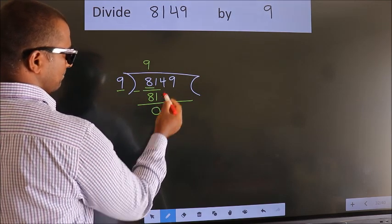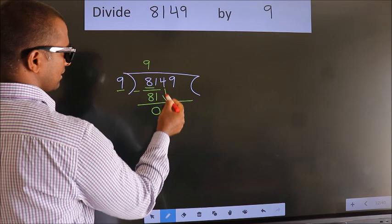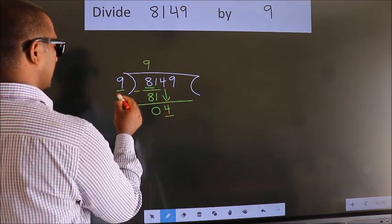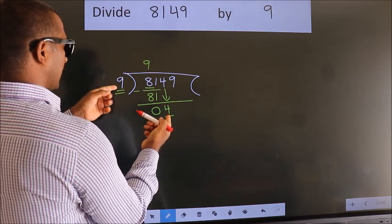After this, bring down the beside number. So 4 comes down. Here we have 4, here 9. 4 is smaller than 9.